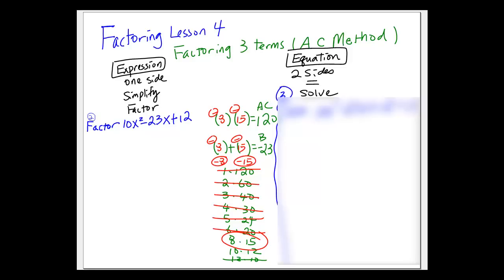After getting those two numbers, we go back to the original question and break the middle term into minus 8x and minus 15x. Together they still give negative 23x — we didn't change the values. We bring down the first term, 10x squared, and the last term, plus 12. We've changed a three-term question to a four-term question without changing the values.